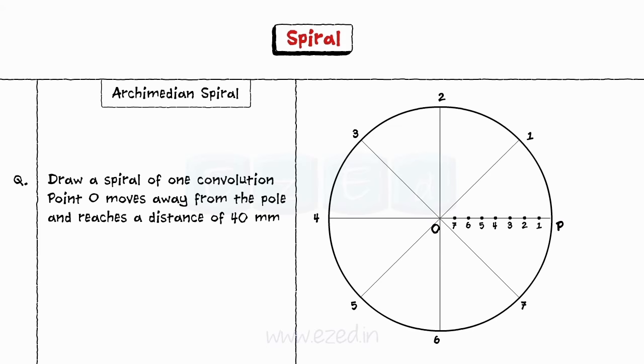Step 3. Taking distance O1 on line OP, draw an arc till it cuts line O1. Taking distance O2 on line OP, draw an arc till it cuts line O2. Now taking distance O3 on line OP, draw an arc till it cuts line O3.